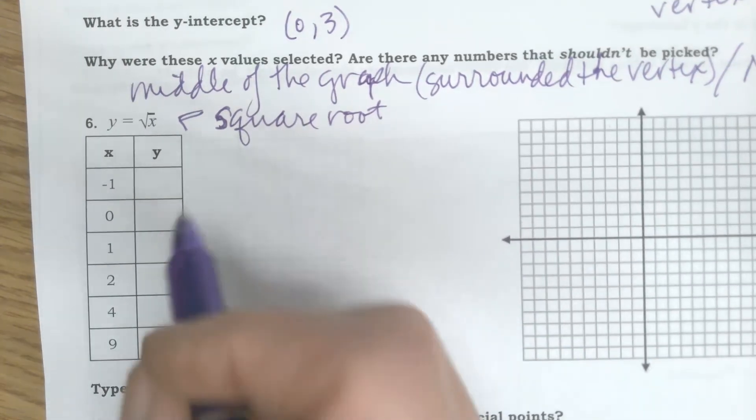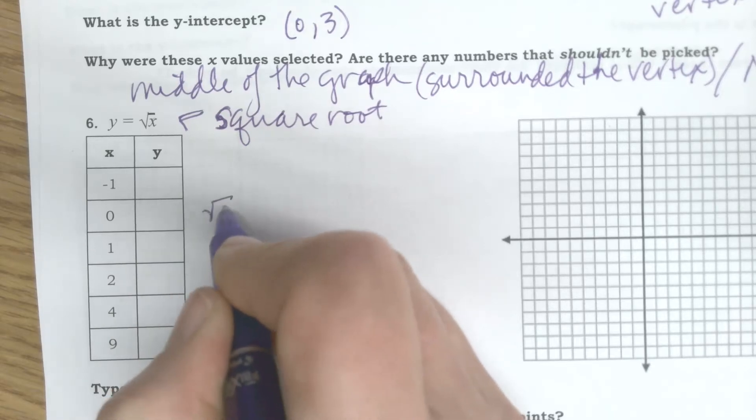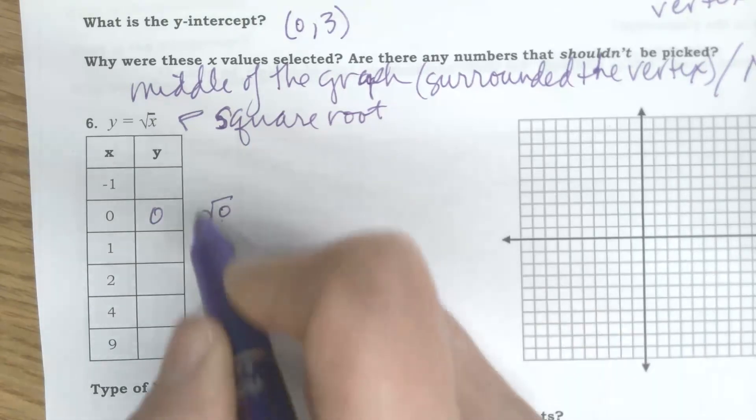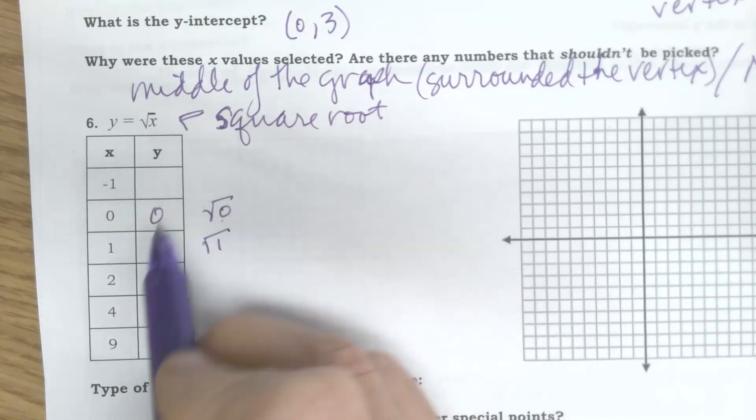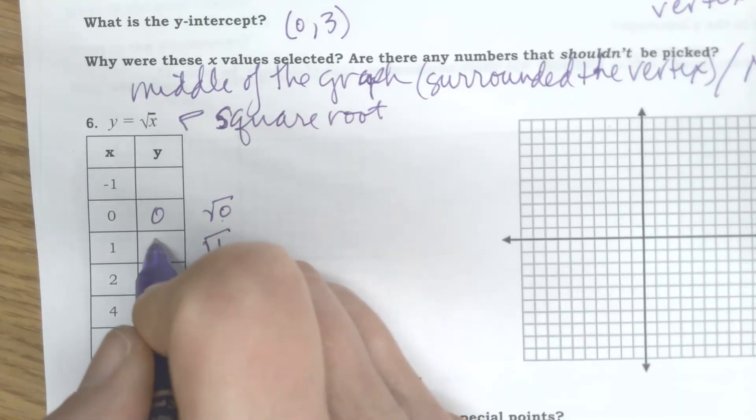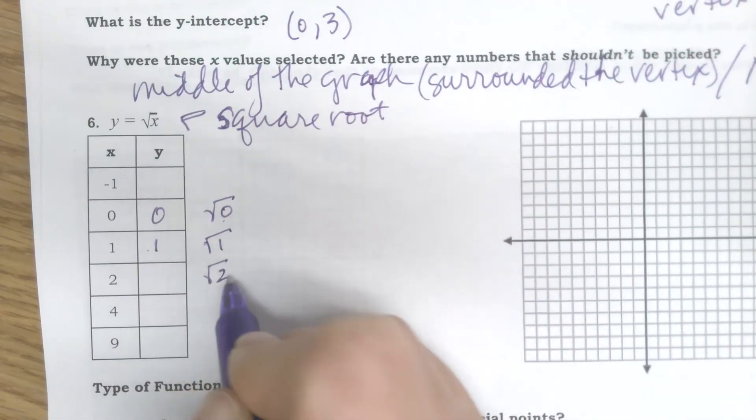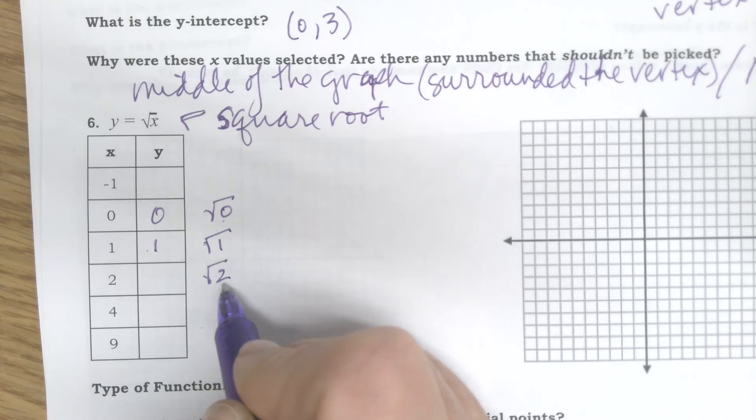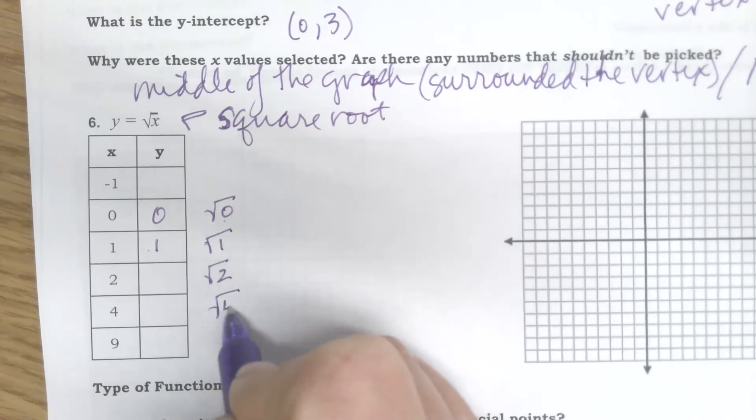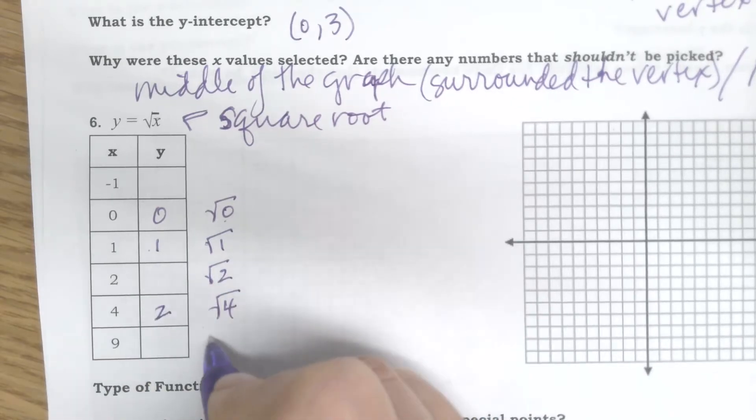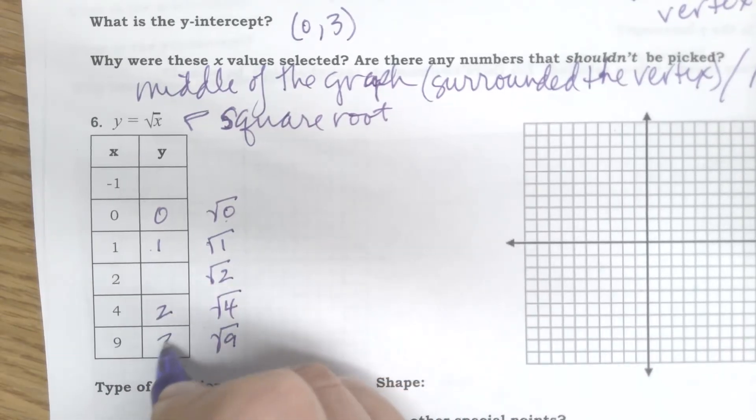And a square root means I'm looking for two numbers that multiply by itself to get the number that's inside of there. I'm going to start with an easy one. What's the square root of 0? What number times itself equals 0? That's 0. Another easy one. 1. What number times itself gives me 1? 1. 1 times 1 is 1. What number times itself gives me 2? I don't know, I can't think of one. I'll come back to that. What number times itself gives me 4? 2. What number times itself gives me 9? 3.